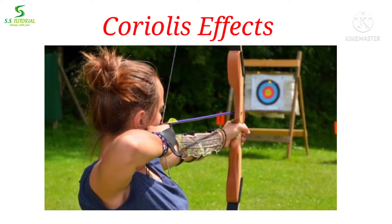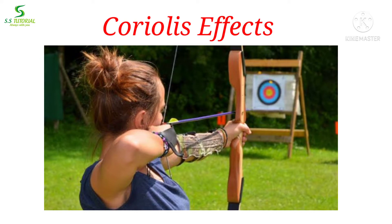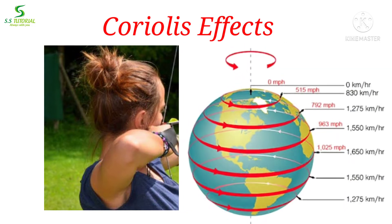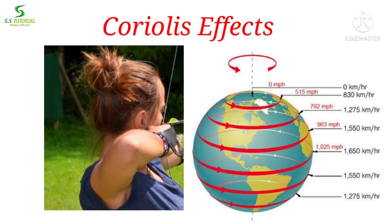Imagine you are an archer in the northern hemisphere and you have a target to hit with an arrow. If you throw the arrow in a straight line toward the target, you will miss, because your arrow will deflect to the right side. Whereas in the southern hemisphere, your arrow will deflect to the left side. This happens due to the different rotational speeds at different parts of the Earth. This apparent deflection is known as the Coriolis effect.